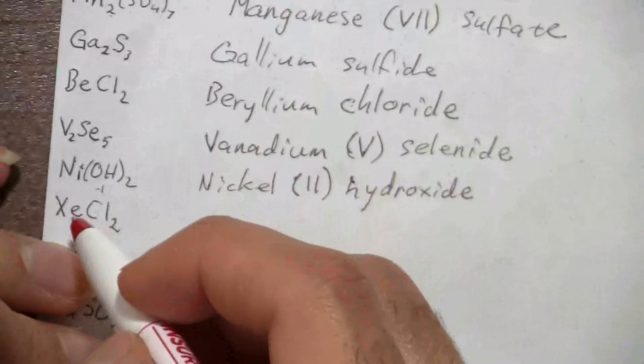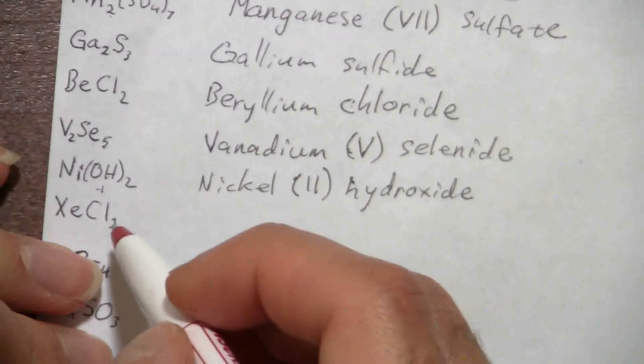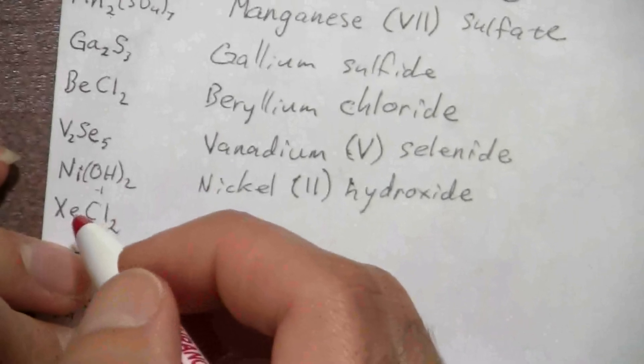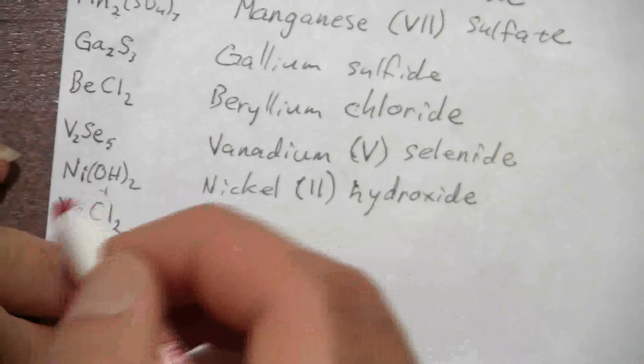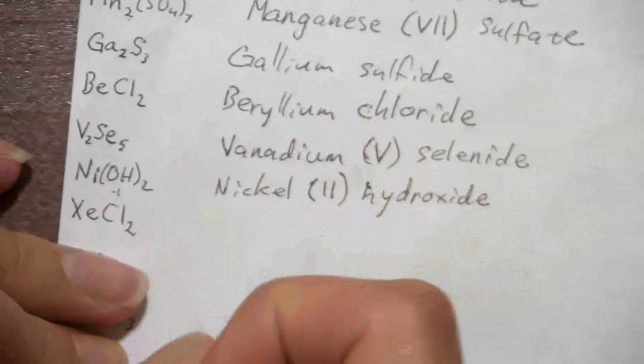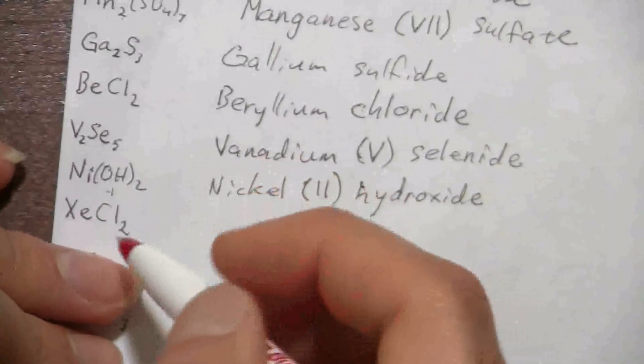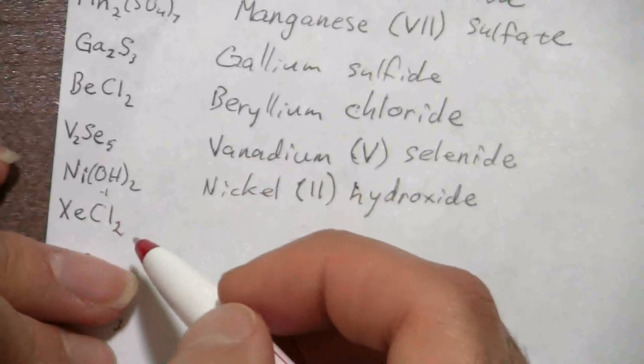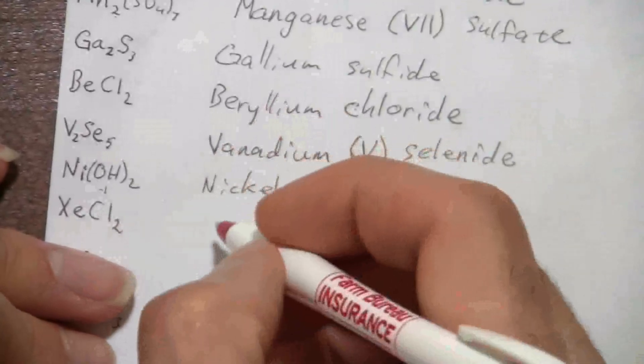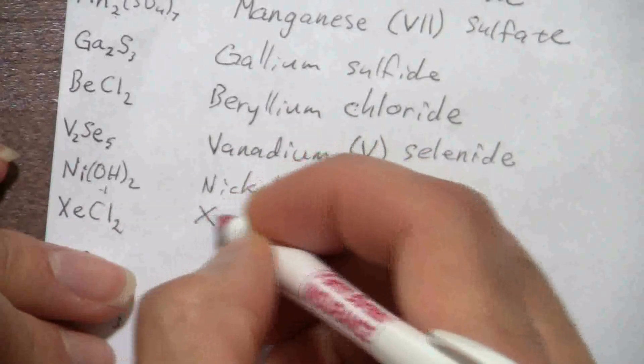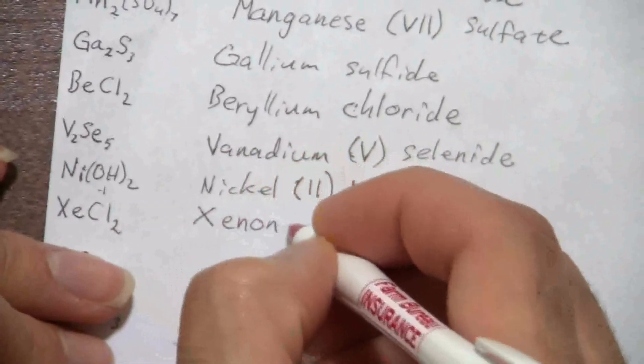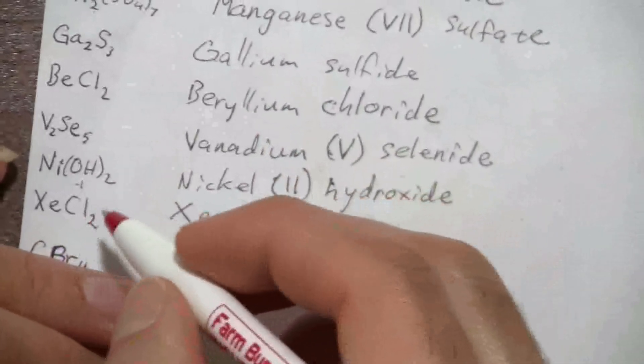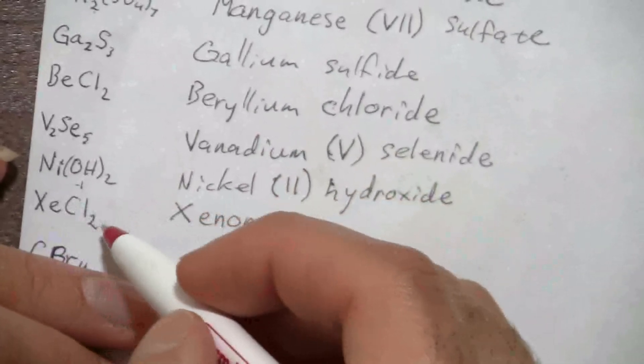Now here we have xenon and chlorine. Xenon is a non-metal, it's a noble gas. This is one of the rare compounds that xenon will form. And so here we have two non-metals, so that makes this a molecule, and therefore we name it using the rules for molecules, where we use the Greek prefixes.